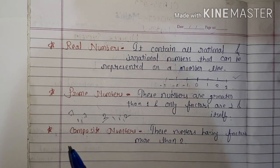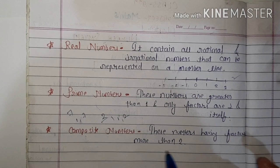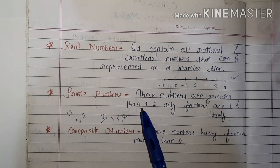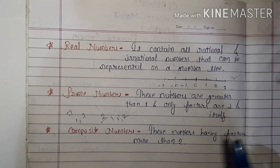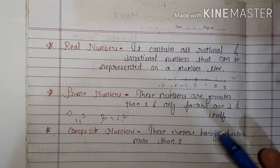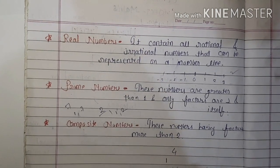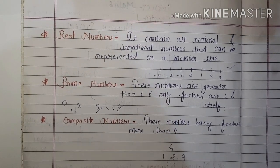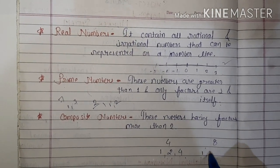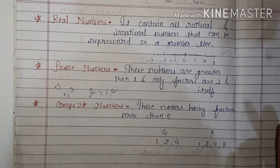What are composite numbers? Composite numbers have more than two factors. Prime numbers have exactly two factors — one and itself — but composite numbers have more. For example, four has factors one, two, and four — that is three factors. And eight has factors one, two, four, and eight — more than two factors. So these are composite numbers.